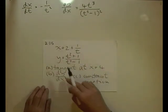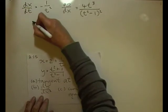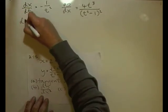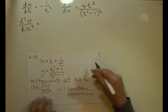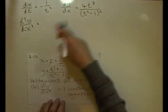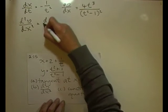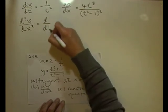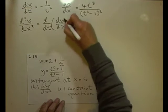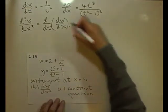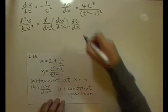Now for the second derivative, d²y/dx². Since dy/dx is expressed in terms of t, we can only differentiate with respect to t. So d²y/dx² = [d/dt(dy/dx)] × dt/dx, using the chain rule, where dt/dx is the reciprocal of dx/dt.